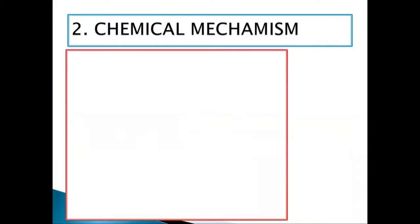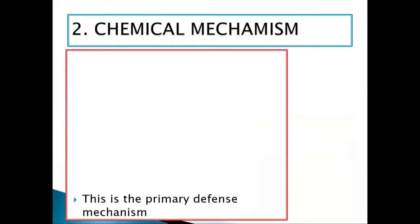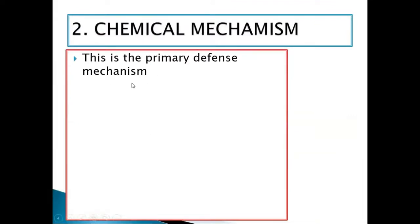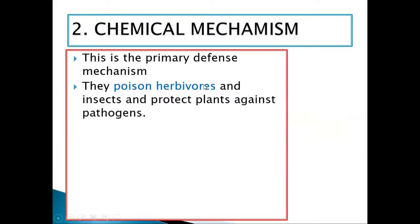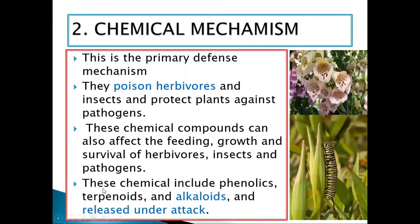Number two is the chemical defense mechanism. This is a primary defense mechanism where plants release poisonous compounds to protect against herbivores and insects. These chemical compounds can affect the feeding, growth, and survival of herbivores, insects, and pathogens. Chemicals include phenolics, terpenoids, and alkaloids, which are released under attack. The body smell of these chemicals can scare away organisms or kill them.